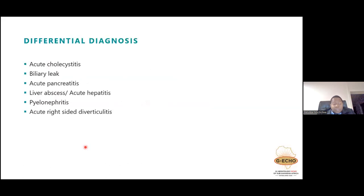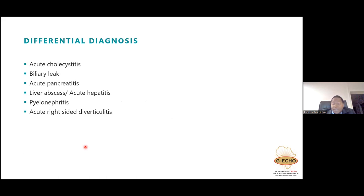Differential diagnoses include acute pancreatitis, acute cholecystitis (which may coexist with cholangitis), biliary leak, liver abscess, acute hepatitis, pyelonephritis, and acute right-sided diverticulitis. In patients presenting in shock, other shock-causing diagnoses must be considered. In young sexually active females, PID with an associated peri-hepatic collection — Fitz-Hugh-Curtis syndrome — should also be considered.